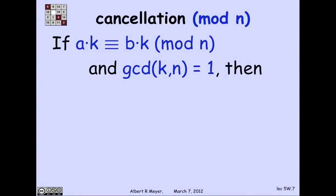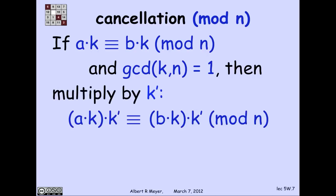Now, I can also cancel k if it's relatively prime to n. And the reason is that if I have ak equivalent to bk mod n and the GCD of k and n is 1, then I have this k prime that's an inverse of k. So I just multiply both sides by the inverse of k, namely k prime,